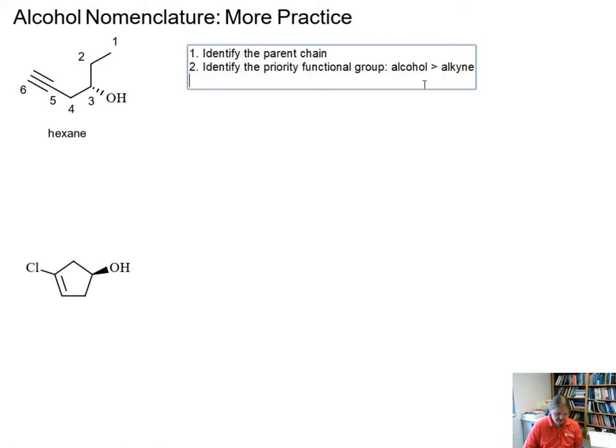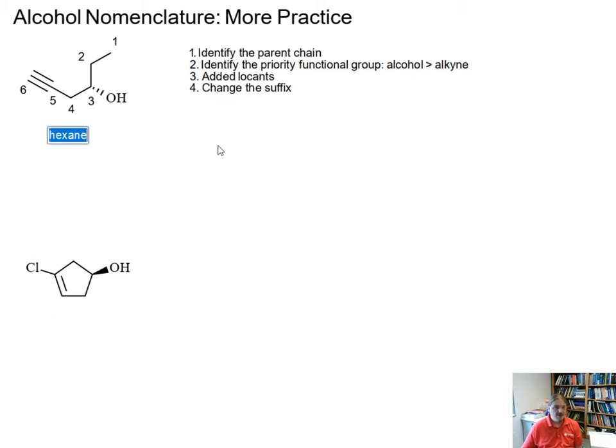Our third thing that we need to do, we've done the numbering. Added our locants. Number four, we need to change the suffix of our name. So the alcohol has a higher priority. It changes the suffix from hexane to hexanol. And we're going to deal with the three in a moment. Without the alkyne functional group, we could call this three hexanol and be done. But how do I handle that alkyne? It's not a substituent. It's in the parent chain.